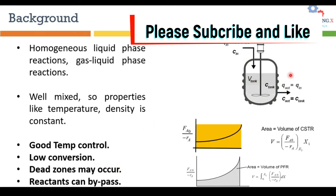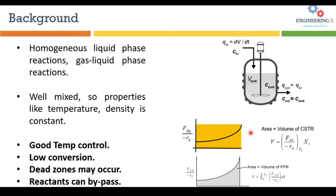On the right-hand side of this slide there are two graphs called Levenspiel plots. The first one is the graph for a Continuous Stirred Tank Reactor, and the area of this rectangle is equal to the volume of the CSTR. This expression is derived in terms of conversion of the base reactant. Levenspiel plots are plotted with the molar flow rate of reactant A divided by the rate of reaction of component A on the y-axis, and conversion on the x-axis.